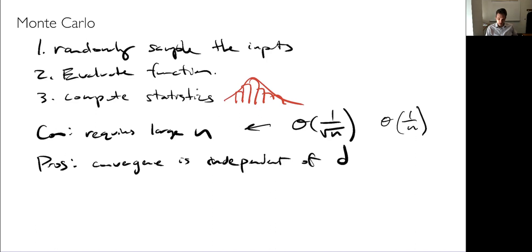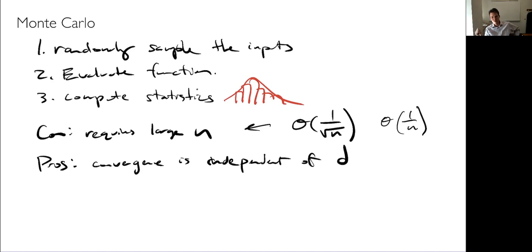To improve convergence, instead of just randomly sampling we want to choose samples that provide good coverage of the distribution. Methods like Latin hypercube sampling can speed up convergence. Another popular method is low-discrepancy sequences — these are popular for Monte Carlo because as we add more samples, we don't have to throw away the old ones. The combination of Monte Carlo with low-discrepancy sequences is often called quasi-Monte Carlo and can scale better, achieving order 1/N rather than 1/√N convergence.